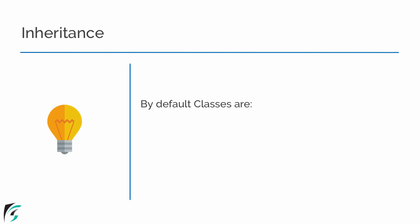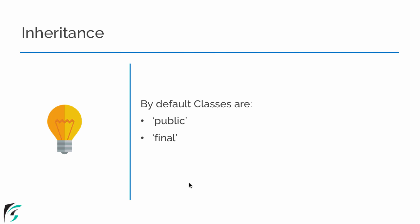Now by default, all the classes in Kotlin are public in nature and also they are final in nature. That is, by default, you cannot inherit from a particular class to the derived class or the subclass. So for that, Kotlin provides a special keyword — the open keyword. To inherit all the properties of a particular class, you have to use the keyword open.